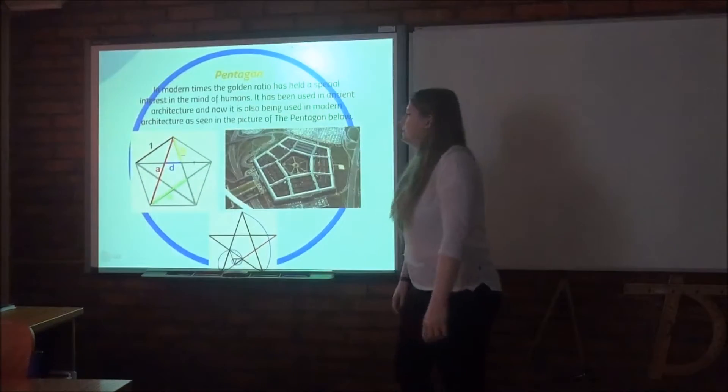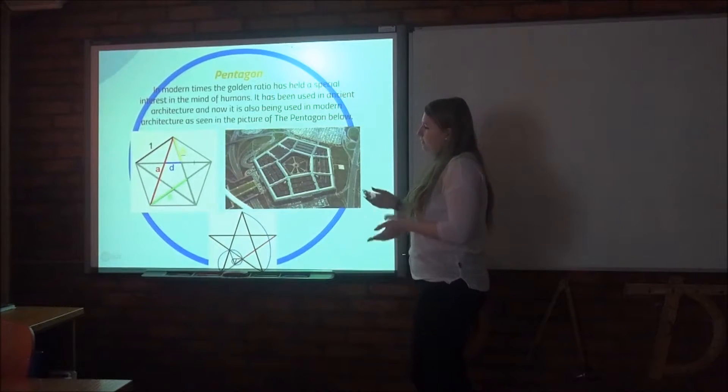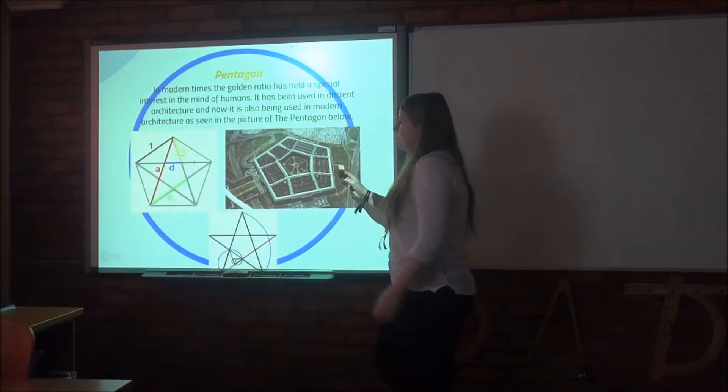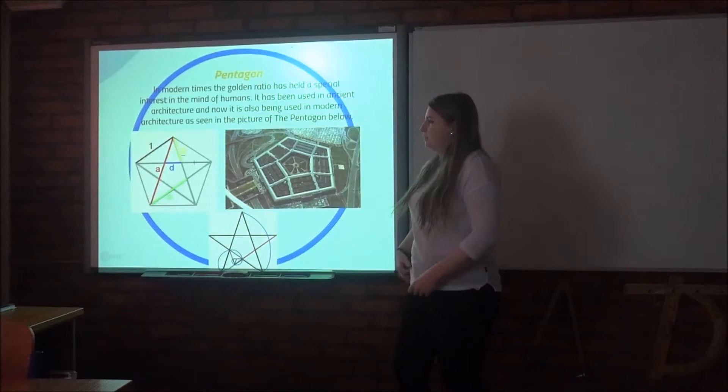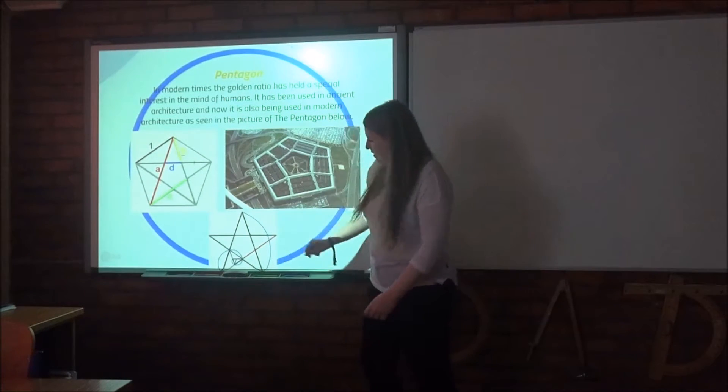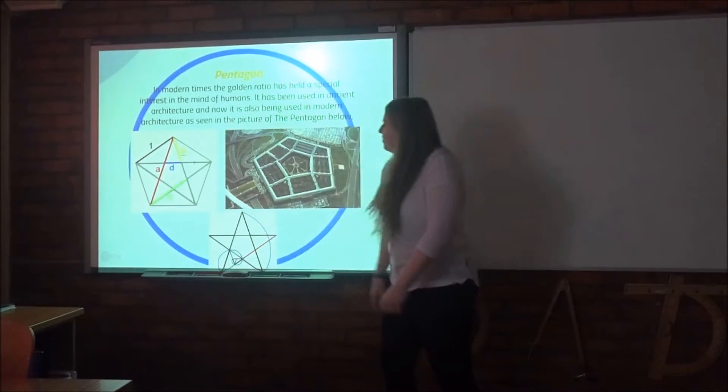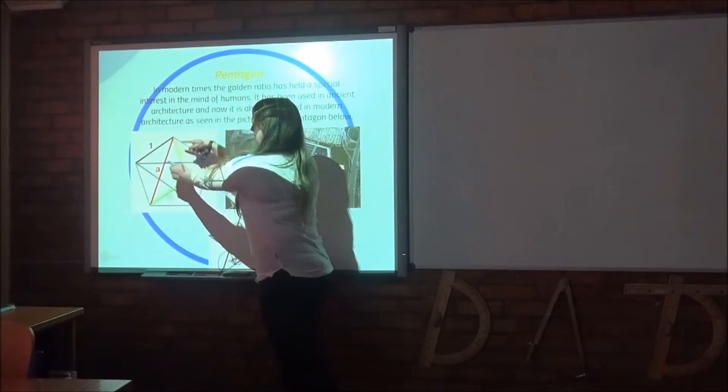The next one is the Pentagon. And this is, of course, in the USA. And why we can see here the ratio, because it's the same shape of the pentagram. And as we all know, the pentagram has the golden ratio. Also, you can see it here. And also, these pieces.